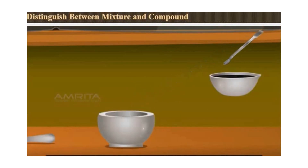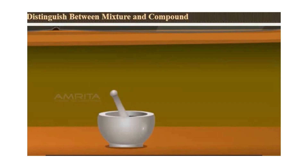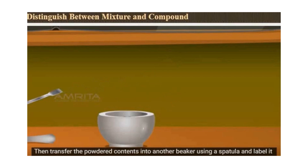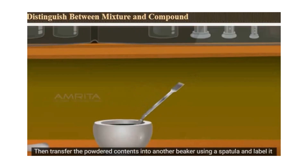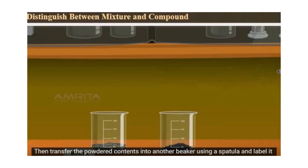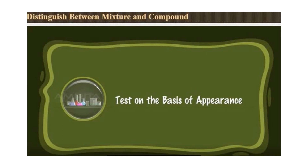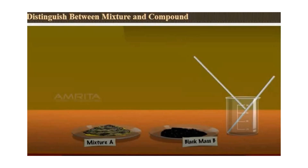This substance is then put in a mortar to be powdered using a pestle. The substance is now transferred into a beaker and labeled Black Mass B. Let us compare based on their appearance. In Mixture A, we can still see the boundary between the yellow substance, which is sulfur, and the black substance, which is iron filings, because the two elements are just physically combined and they retain their properties. In Black Mass B, the sulfur and iron filings are no longer visible because after heating, the two elements did not retain their properties.